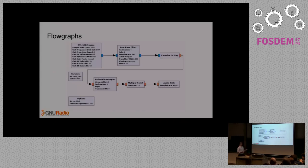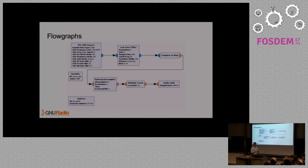You chain these blocks together in what we call flow graphs. As an example here, this is a very basic flow graph that's taking an RTL-SDR source — those little $20 RTL dongles — passing it through a basic flow graph and dumping it to audio. This is actually a very basic FM receiver that you can make with GNU Radio.